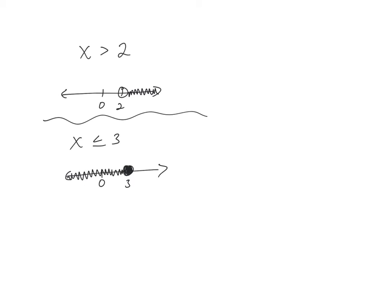And this one is and equal, so that means I color in the circle also. So the difference between the meaning in these two is on the top one, 2 is actually not a solution, the solutions are anything greater than 2.